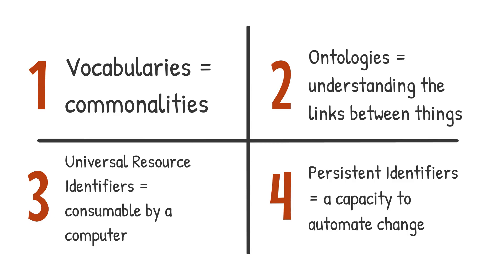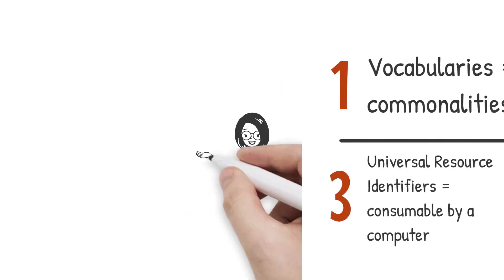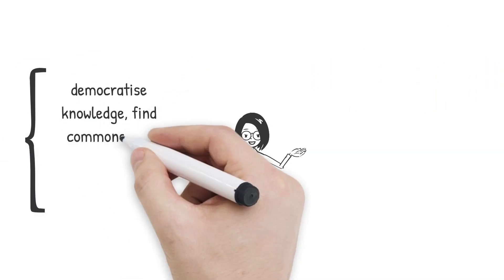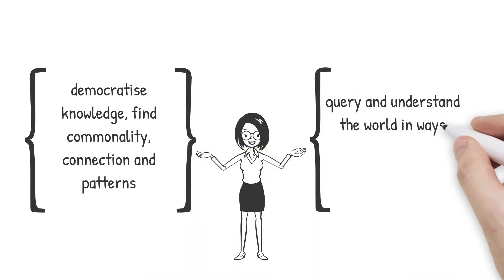We are able to democratize knowledge, find commonality, connection, and patterns where we didn't know they existed, and we can use computers to help us query and understand the world in ways we've never been able to before.